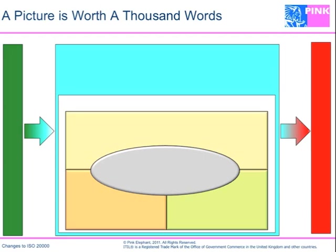One thing that jumps out as you look at Section 3, terms and definitions, is quite a bit of change. Two definitions were deleted: there's no change record definition nor a service desk definition — those are handled within the body of the processes themselves. In addition to those two deletions, there are 11 definitions that have changed, mostly wording changes. There are also 23 new definitions: 11 tied to ISO 9000, 2 tied to the 27,000 series, and 1 tied to 31,000.